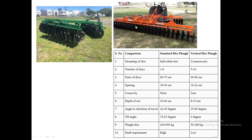The standard disc plow has discs connected to individual axes, with the number of discs varying between one to six. The vertical disc plow has a common axis to which multiple discs — generally five to twenty-four — are attached. The size of the discs in a standard disc plow is larger compared to a vertical disc plow, and the concavity is greater in the standard disc plow.